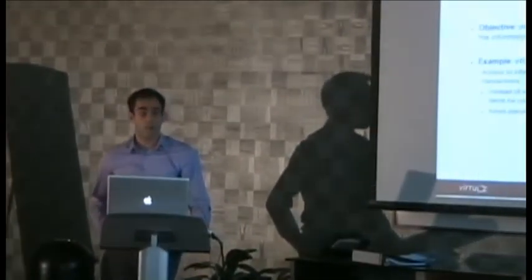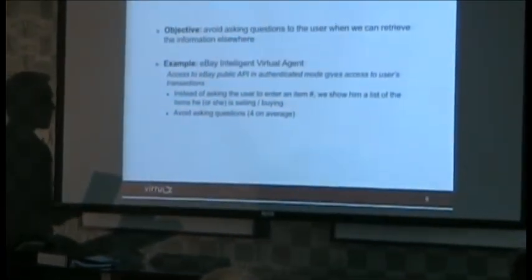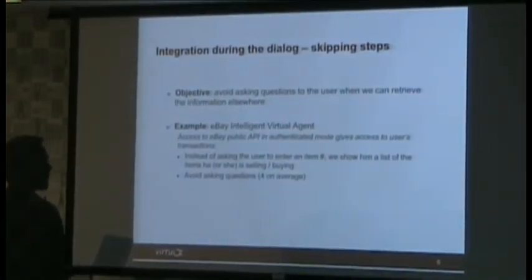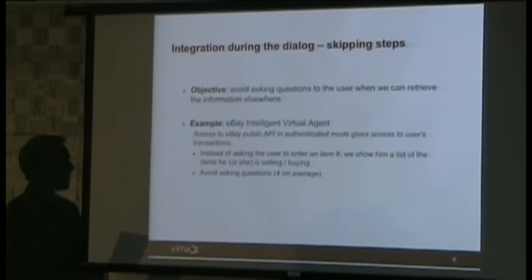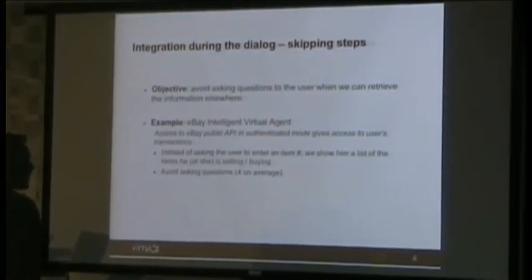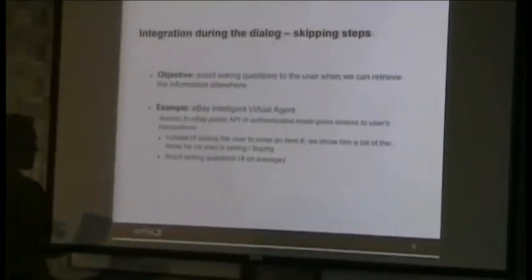What I'll do next is give you a few examples of the type of integrations that can be done with a client and what kind of benefits we get from that. The first one is, during dialogue, how we can skip steps and avoid asking useless questions to the user to get to the solution faster. The example I want to take is eBay. A lot of questions are similar to 'I want to cancel a bid — I put a bid on something but in the end I don't want it.' There are a lot of complex rules that govern whether or not you can cancel a bid — for instance, are there more than 12 hours before the end of the auction, or is it a Dutch auction?